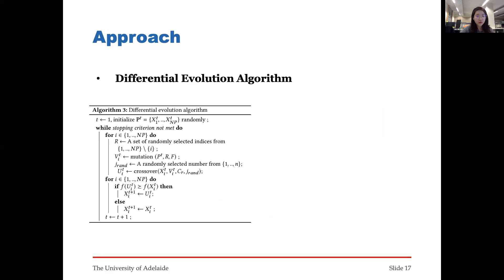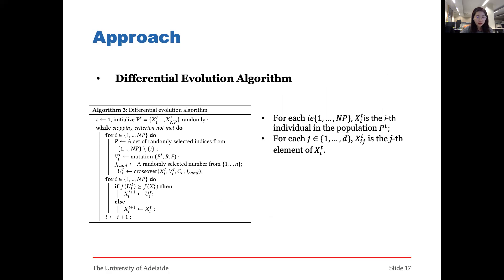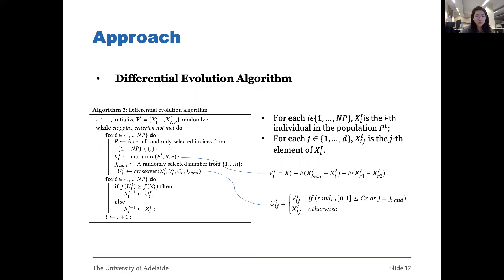The algorithm used in this paper is a classical differential evolution algorithm. Because we only discuss the stockpile blending problem in one month, and each month can contain several parcels, and each parcel can claim material from several stockpiles, here is how we construct the decision vectors. This shows the mutation operator and crossover operator used in the algorithm.